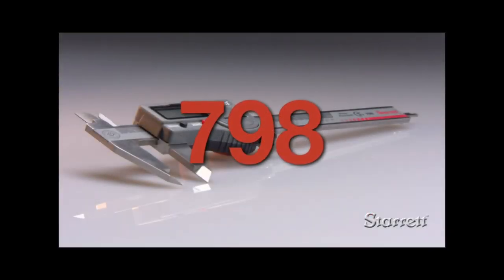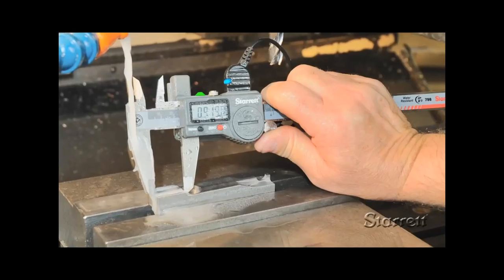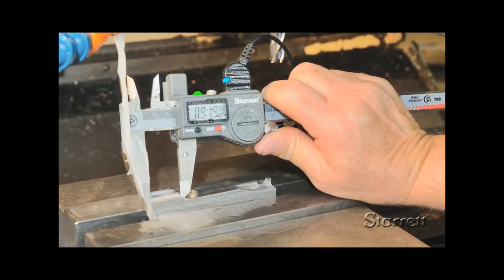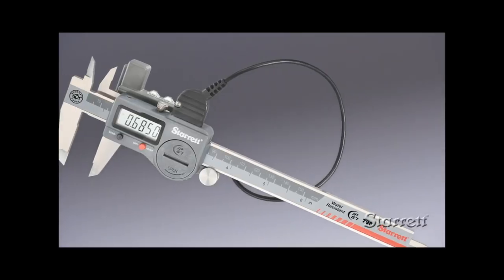The state-of-the-art 798 is the latest electronic slide caliper from Starrett. These top quality tools have IP67 protection from liquid and solid contaminants and include output to interface with data collection.